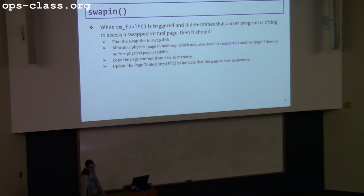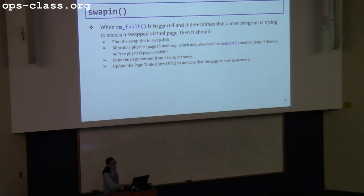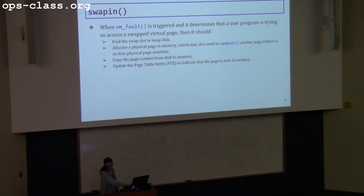Swap in happens whenever a VM fault is triggered and the fault determines it is a page fault — meaning the page is not in memory and is on the swap disk. Find the swap block that belongs to that page, allocate a page in physical memory (which could also trigger a swap out if there are no free physical blocks), then copy the content from disk to memory and update the page table to indicate this page is now in memory.